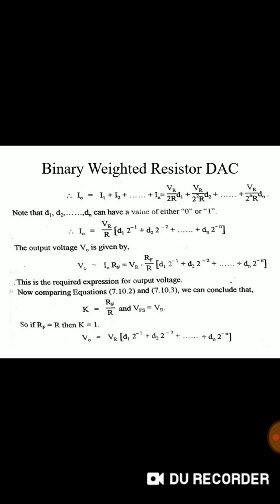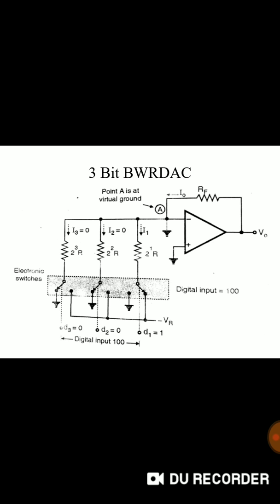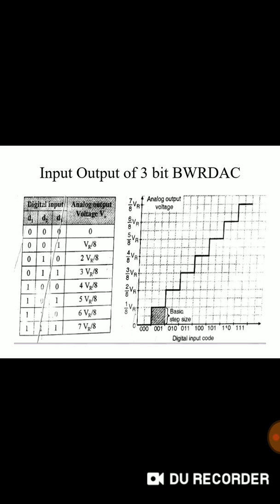Using these expressions we can eventually find out the value of VO as VR into bracket D1 by 2 plus D2 upon 2 square plus Dn upon 2 raise to n. Just remember D1 is MSB and Dn is LSB which is last bit. This is typical circuit diagram for 3-bit binary weighted resistance DAC. Potential A is at ground terminal and using the same formula we can find out values for output voltage for all the combinations also from all 0's to all 1's like this.